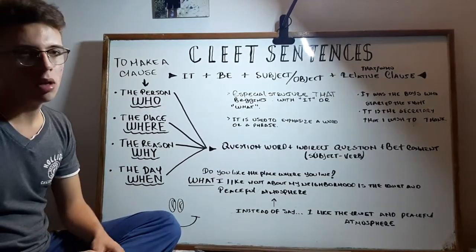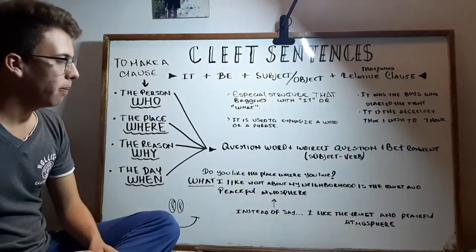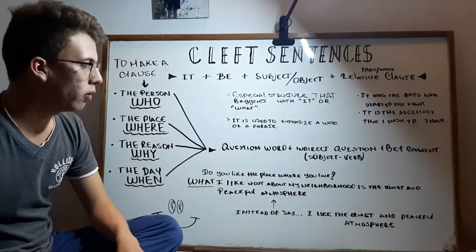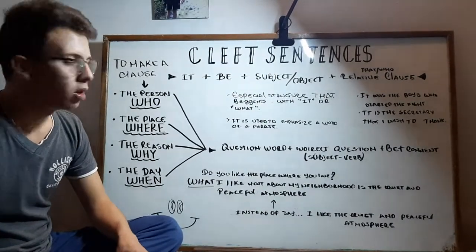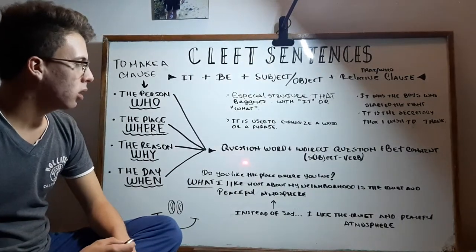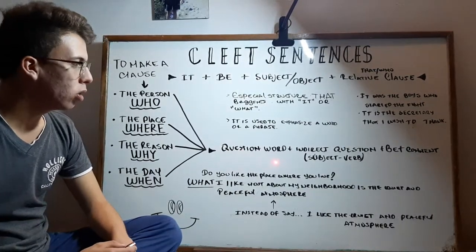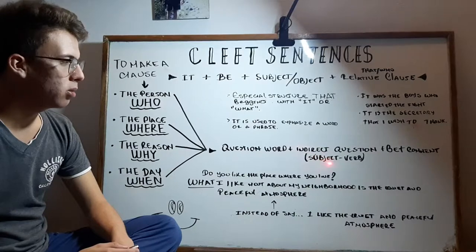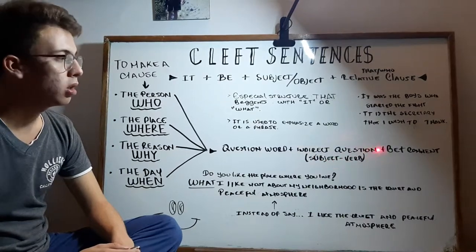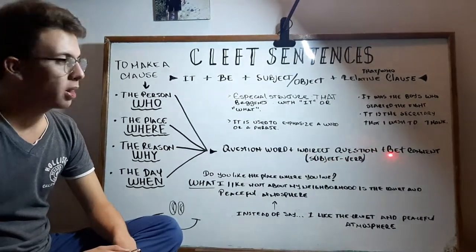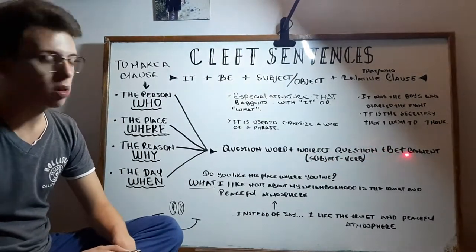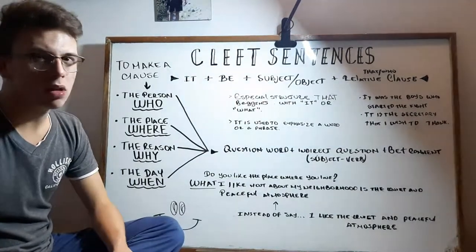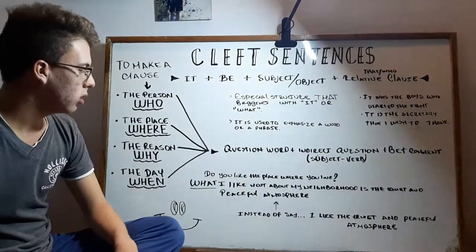The question words are: who, where, why, when, and whom. The structure of the question word cleft is: question word plus indirect question using subject plus verb, plus 'be,' plus the comment.